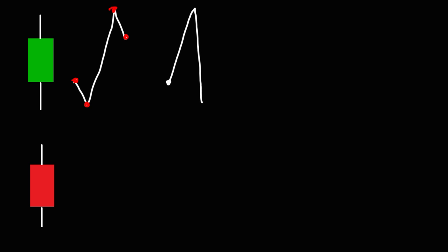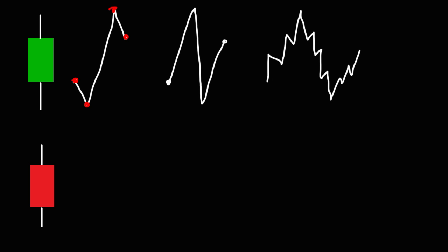Something else that could happen with this particular candlestick is that it can open here, but instead of going down to the low, it can go up to the high and then to the low, and then back to the close. So that's possible too. You could have a lot of variations in the middle — it may actually look something like this. But nevertheless, we have the open, the close, the low of the day, and the high of the day.